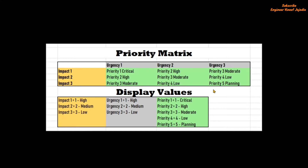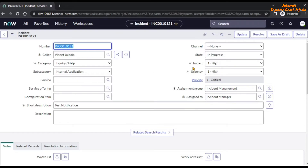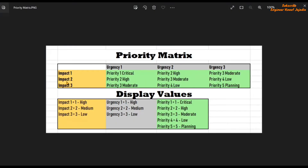Let's see an example. We are going to set the impact to 1 and urgency to 3, and the priority value must be set to 3 Moderate. Going back to the personal developer instance — impact field value is set to 1 High, which is already set, and urgency field value to 3 Low. You will see the priority field value changes to 3 Moderate, which is according to the matrix: Impact 1 and Urgency 3 gives Priority 3 Moderate.